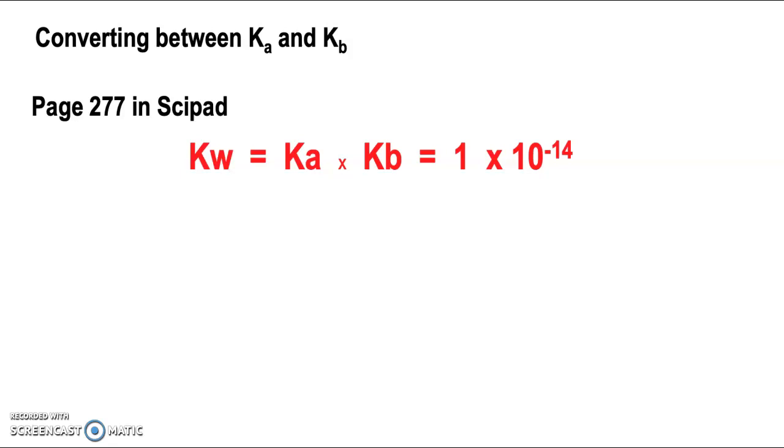In order to do the next step, which is to take the Ka value through to Kb, we use this expression here where Ka times Kb equals 1 times 10 to the negative 14.